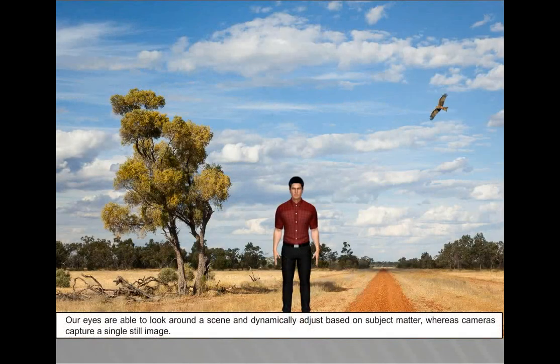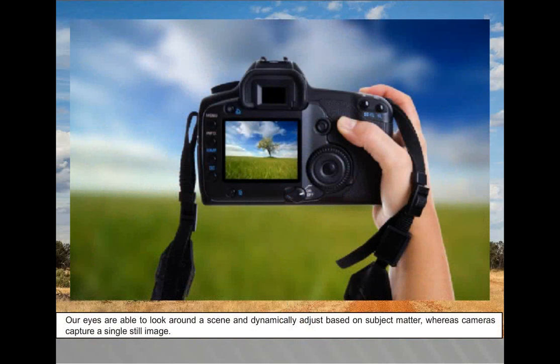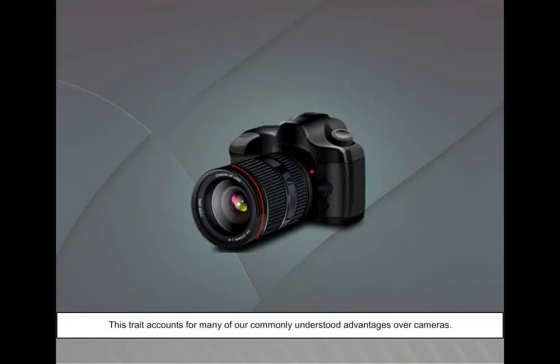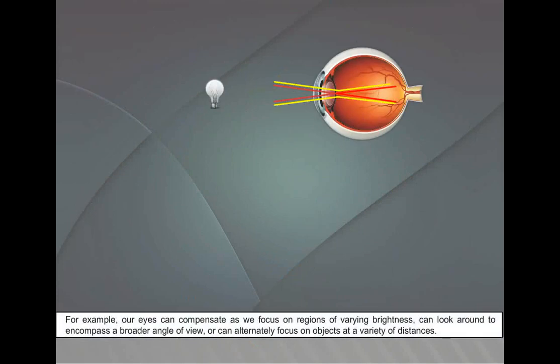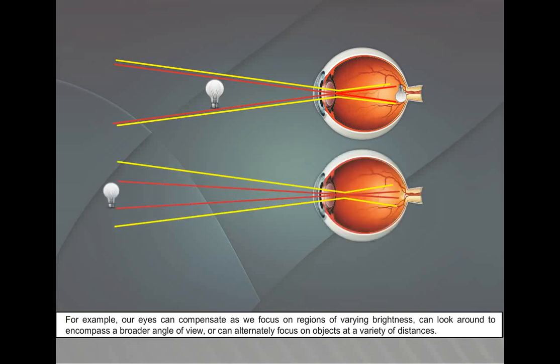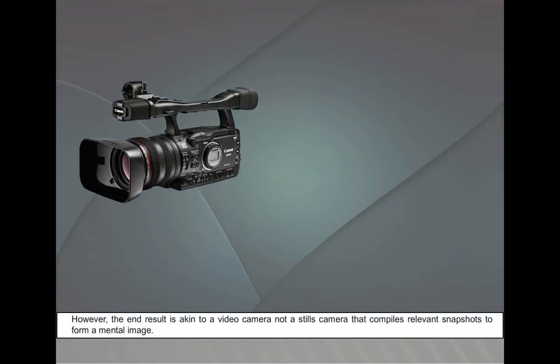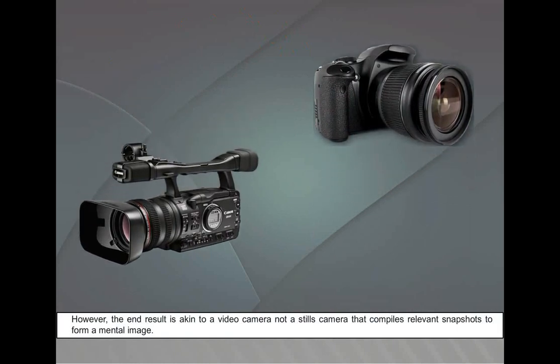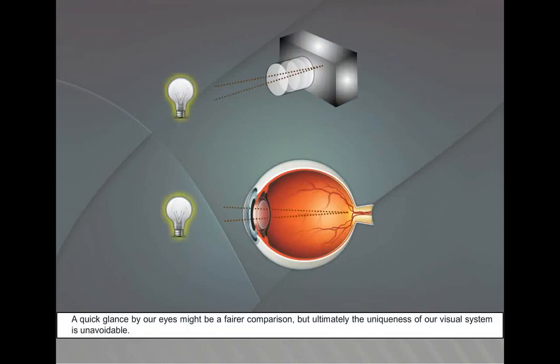Photography versus human eye: Our eyes are capable of looking around a scene and dynamically adjusting based on subject matter, whereas cameras capture a single still image. This trait accounts for many of our commonly understood advantages over cameras. For example, our eyes can compensate as we focus on regions of varying brightness, can look around to encompass a broader angle of view, or can alternately focus on objects at a variety of distances. However, the end result is akin to a video camera, not a stills camera, that compiles relevant snapshots to form a mental image. A quick glance by our eyes might be a fairer comparison, but ultimately, the uniqueness of our visual system is unavoidable.